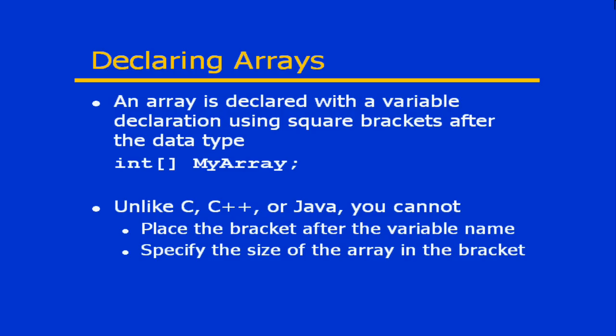Similar to standard variables of data types, when you create an instance of an array, we have to start with a declaration statement to declare the variable that will be used to reference that array. The declaration statement looks pretty much like a standard variable declaration, with one exception: there are open and closed square bracket characters after the name of the data type. By including those square brackets, I'm identifying that myarray is not a single integer value, but rather will be used to reference an array of integers.